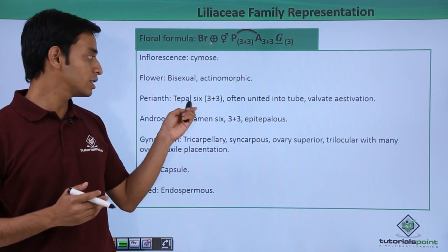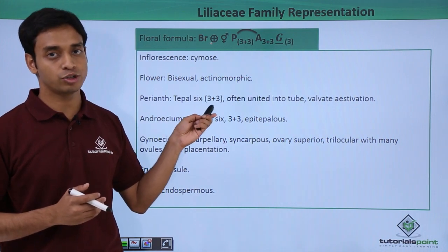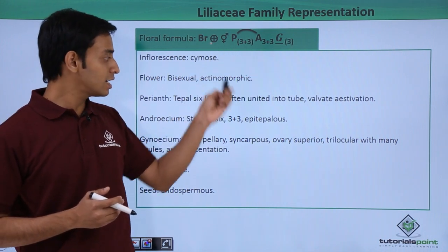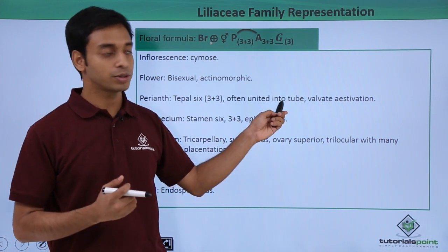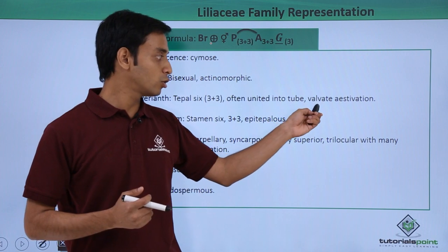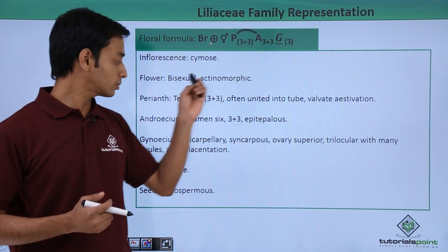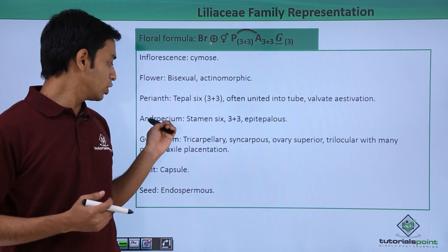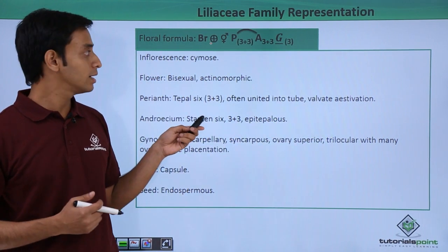There are six such tepals present in a 3+3 arrangement, and at times they are often united into tubes. They follow the valvate type of aestivation.